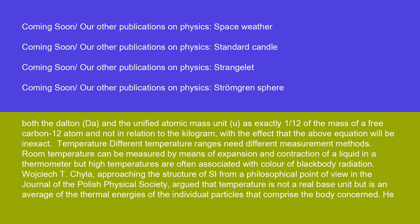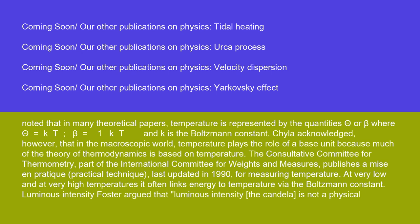Different temperature ranges need different measurement methods. Room temperature can be measured by means of expansion and contraction of a liquid in a thermometer, but high temperatures are often associated with the color of blackbody radiation. Wyczekt Kyla, approaching the structure of SI from a philosophical point of view, argued that temperature is not a real base unit, but is an average of the thermal energies of the individual particles that comprise the body concerned. He noted that in many theoretical papers, temperature is represented by θ or β, where θ = kT and β = 1/kT, and k is the Boltzmann constant. Kyla acknowledged, however, that in the macroscopic world, temperature plays the role of a base unit because much of the theory of thermodynamics is based on temperature.